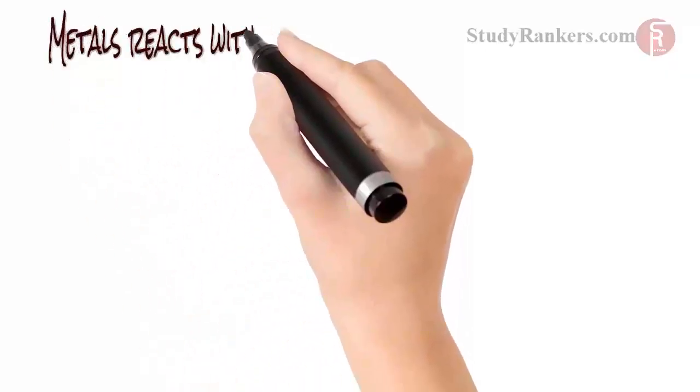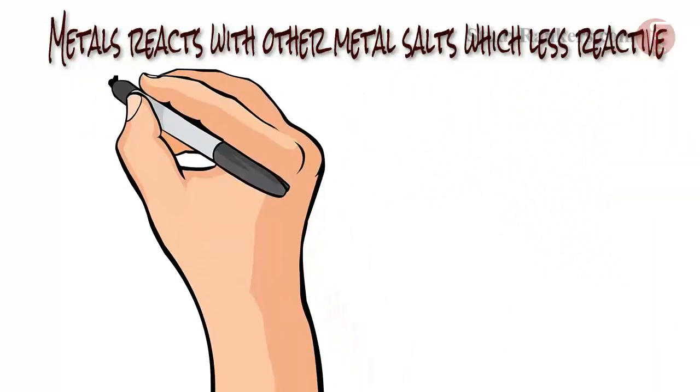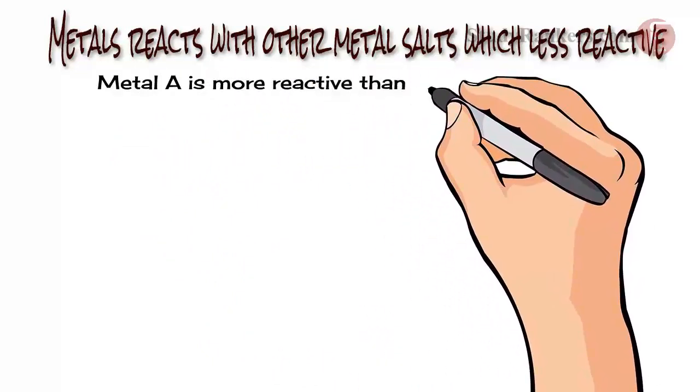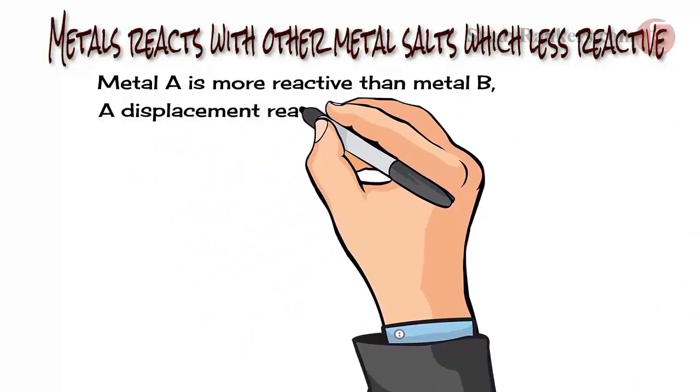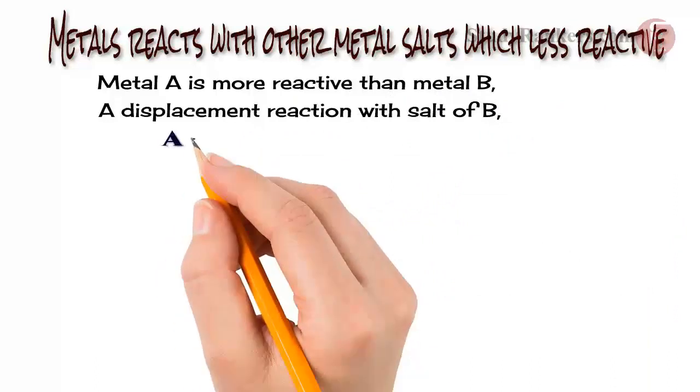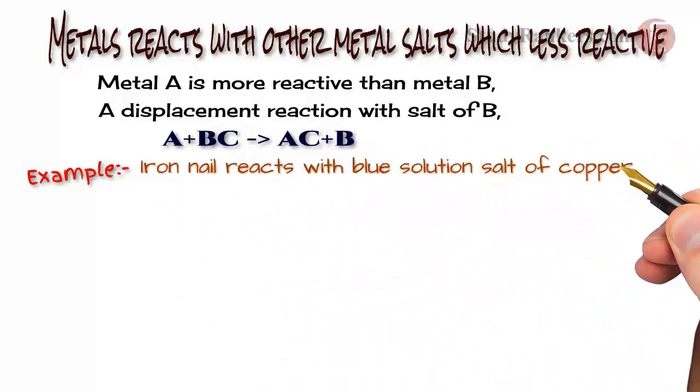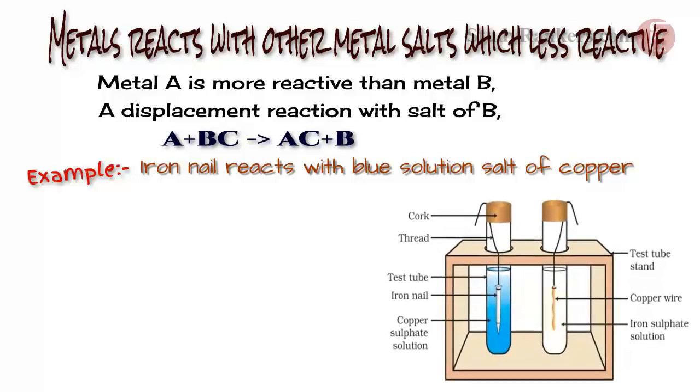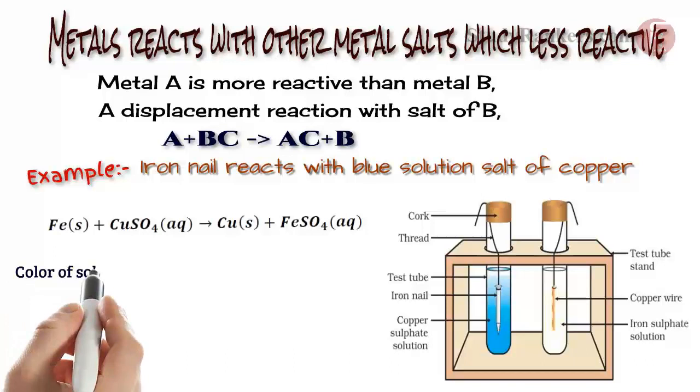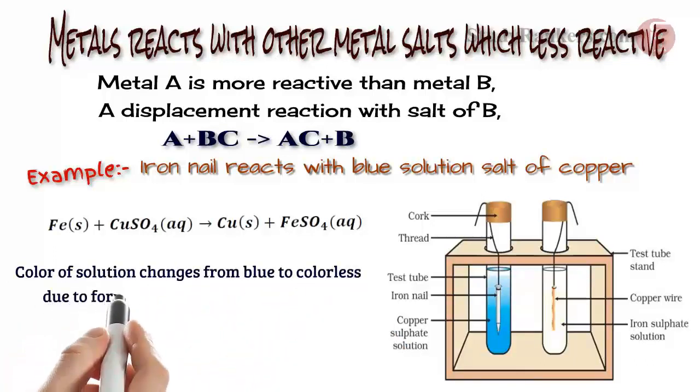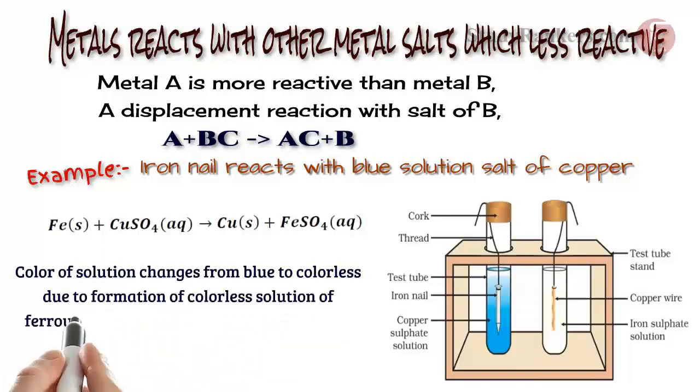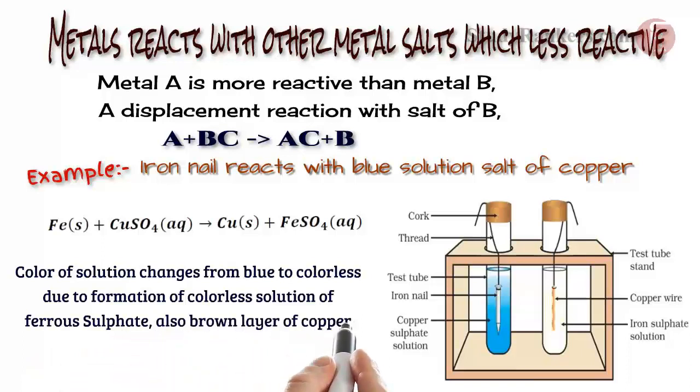Metals react with other metal salts which are less reactive than it. Suppose metal A is more reactive than metal B. A will do a displacement reaction with salt of B, say BC. The reaction will be: A plus BC gives AC plus B. Here is an example for the reaction. Iron nail reacts with blue solution salt of copper, copper sulfate, displaces copper, and forms its own salt, ferrous sulfate. Here is the chemical equation: When Fe reacts with CuSO4, that will give Cu plus FeSO4. The color of solution changes from blue to colorless due to formation of colorless solution of ferrous sulfate. Also, a brown layer of copper metal on iron nail is observed.